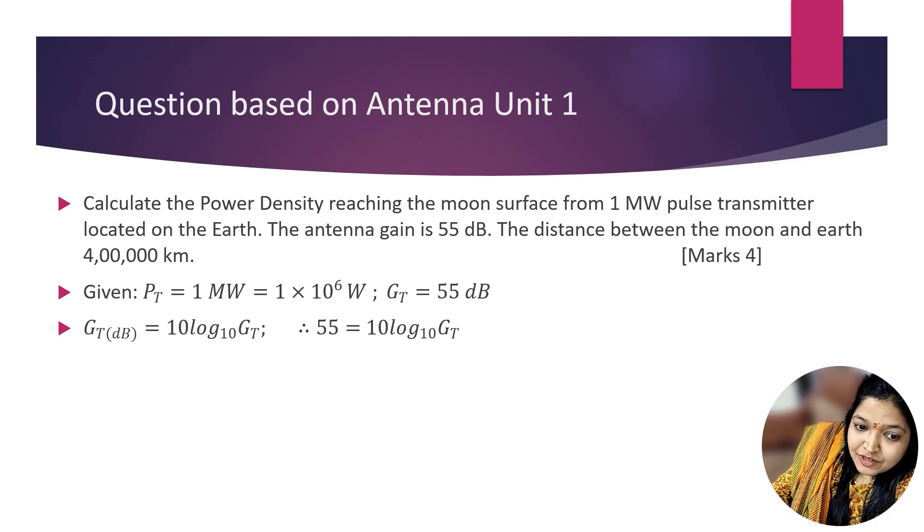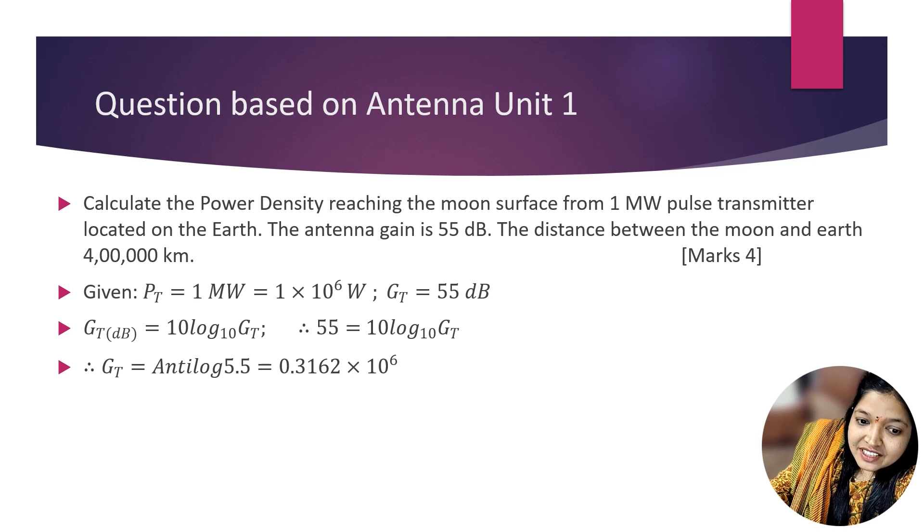First we have to calculate GT because GT is given in dB. The formula is GT(dB) = 10 log₁₀(GT). So the answer is antilog of 5.5, which equals 3.162×10⁵. This is your GT.